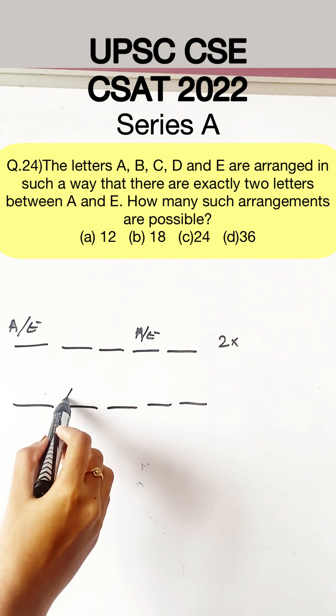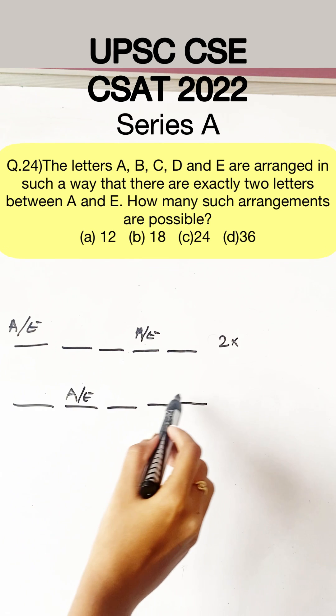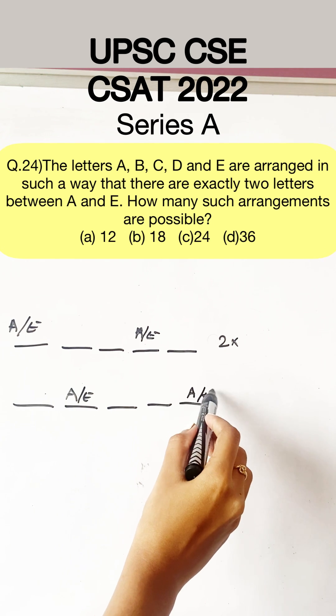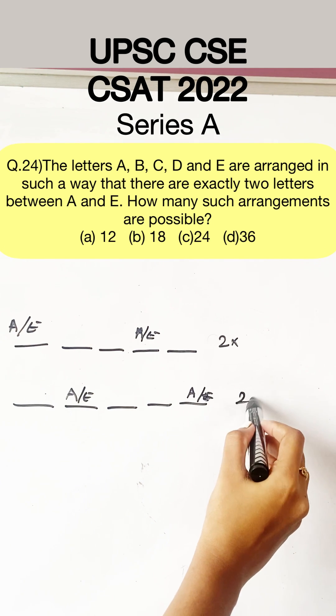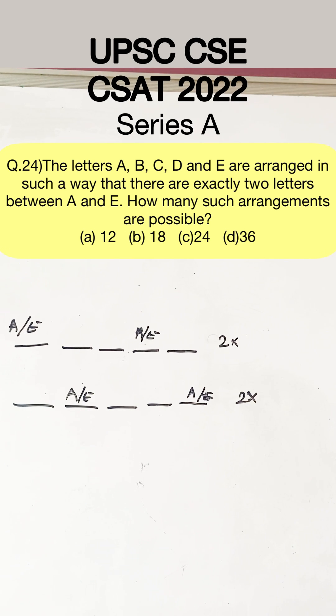There is one more possibility where A or E can occupy this position, and A or E will be here. So these are the only possibilities where there are exactly two letters between A and E.